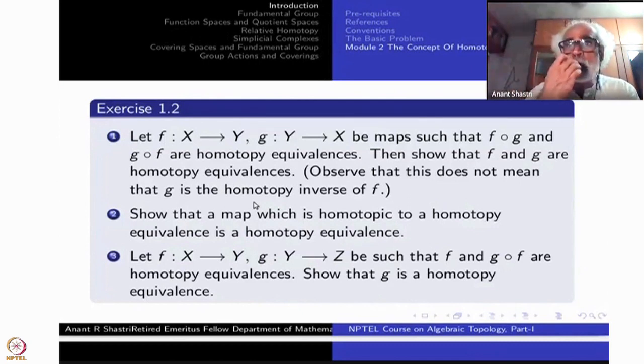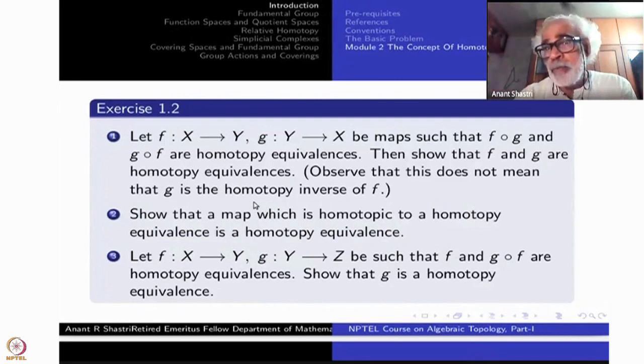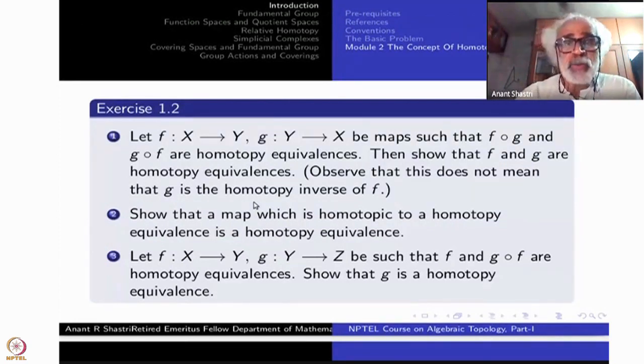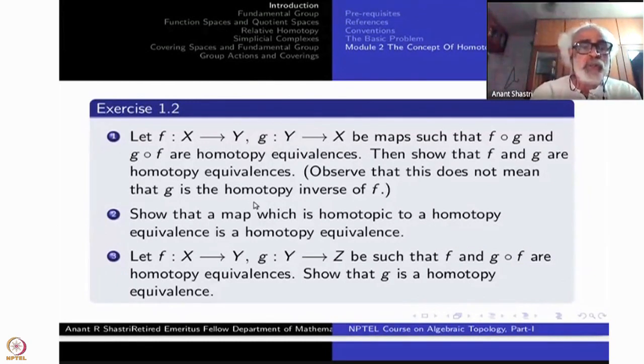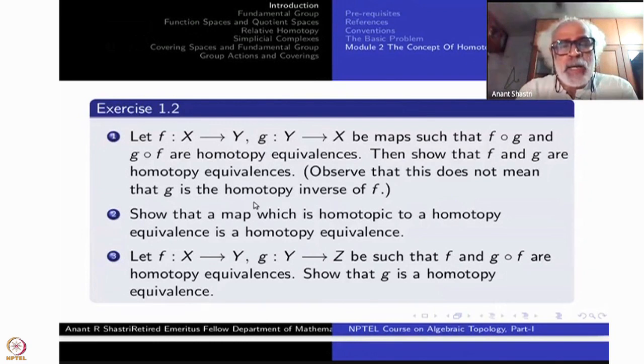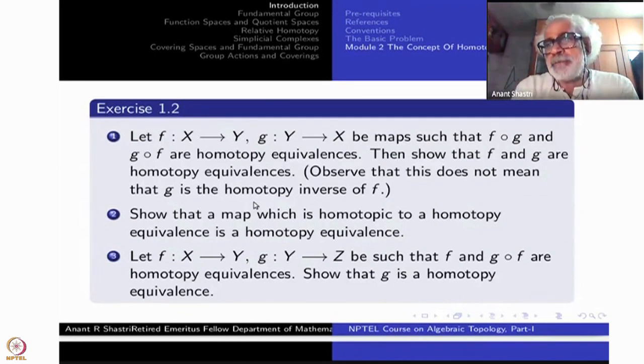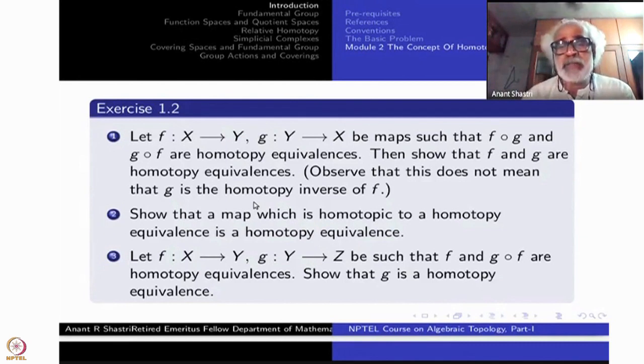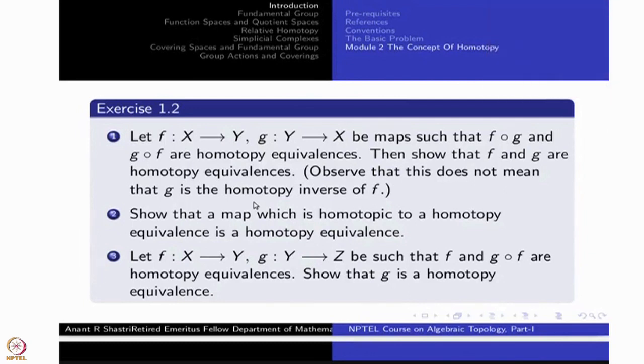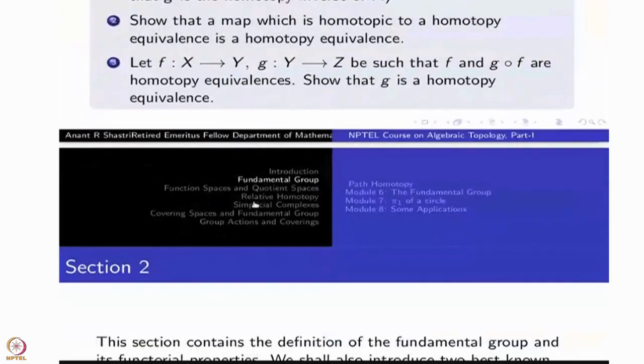Whenever I want to use one of these results in the exercise, by that time, I will give you the solutions. Otherwise, you keep thinking about it. So whenever you get a solution, you can submit it. The tutors and I will check them. Similarly, next problem here, F from X to Y, G from Y to Z be such that F and G composite F are both homotopy equivalences. Show that G is homotopy equivalence. It is like canceling our point. If F is invertible, G composite F is invertible, then G is invertible. This is algebra of homotopy equivalences.